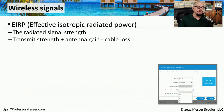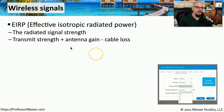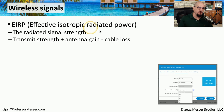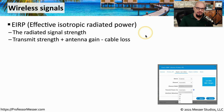Not only do we have to be concerned about the signal being received, but we also have to be concerned about the signal we're transmitting. We measure that transmitted signal as an EIRP, or the Effective Isotropic Radiated Power. This is the signal strength that we are sending from our transmitting devices.